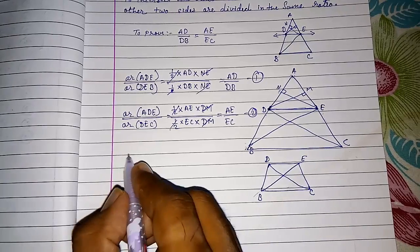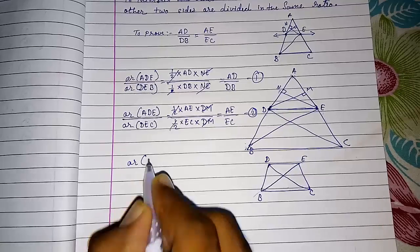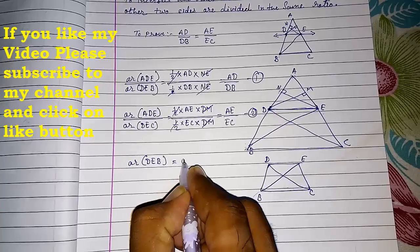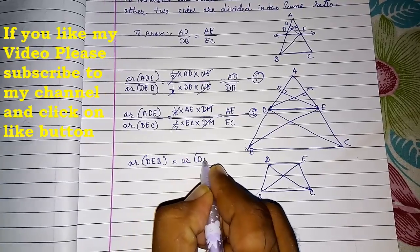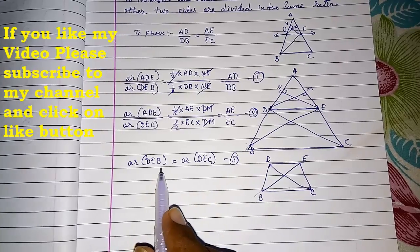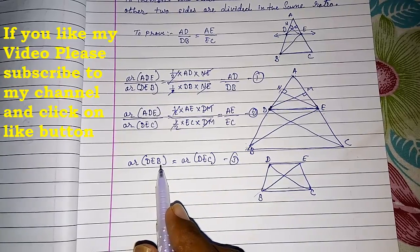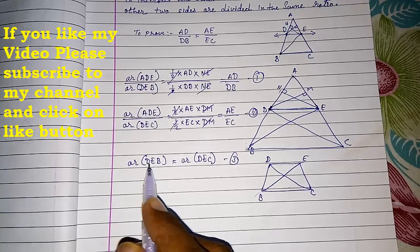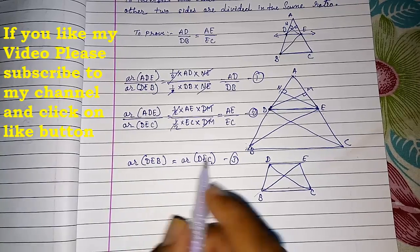So these two triangles are having the same base and between the same parallel. So we can say the area of DEB equals to area of DEC. This is number three. What is the reason you will write: two triangles having the same base and between the same parallel, so we can say that the area will be equal.